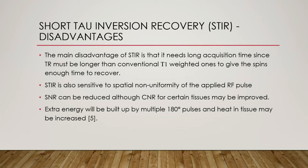The main disadvantage of STIR is that it needs a long acquisition time, since TR must be longer than in conventional T1-weighted sequences to give the spins enough time to recover. Fast spin echo is used as a solution to reduce this time to a reasonable amount. Also, STIR is sensitive to spatial non-uniformity of the applied RF pulse — if the strength of the RF pulse changes with position, then the tip angle of the inversion pulse also changes, causing a change in the quality of fat separation. Additionally, SNR can be reduced, although CNR for certain tissues may be improved, and extra energy built up by multiple 180 degree pulses may increase heat in tissue.